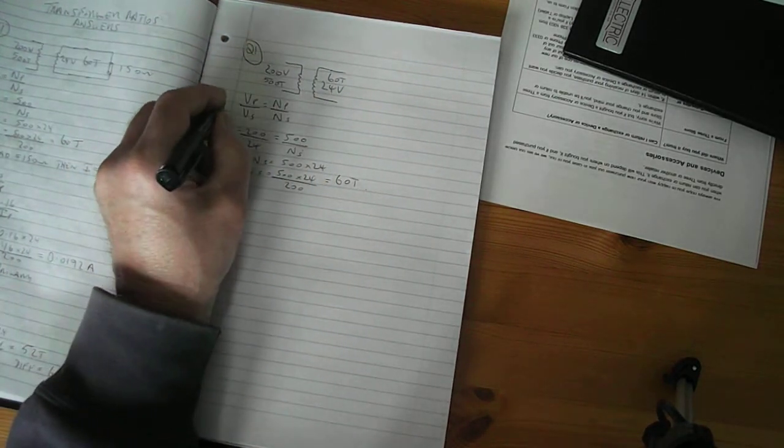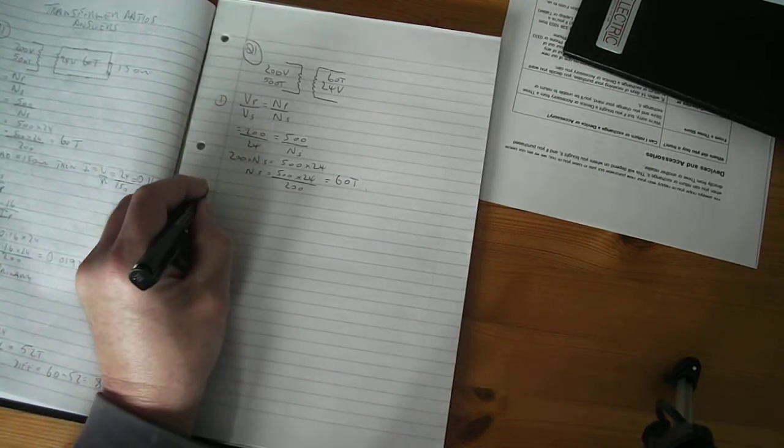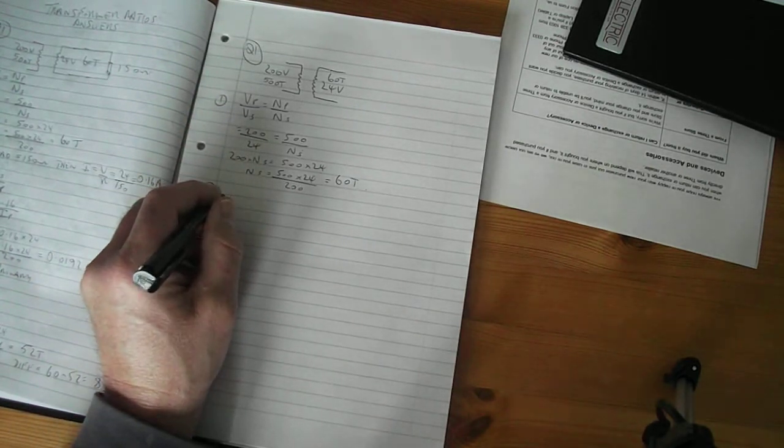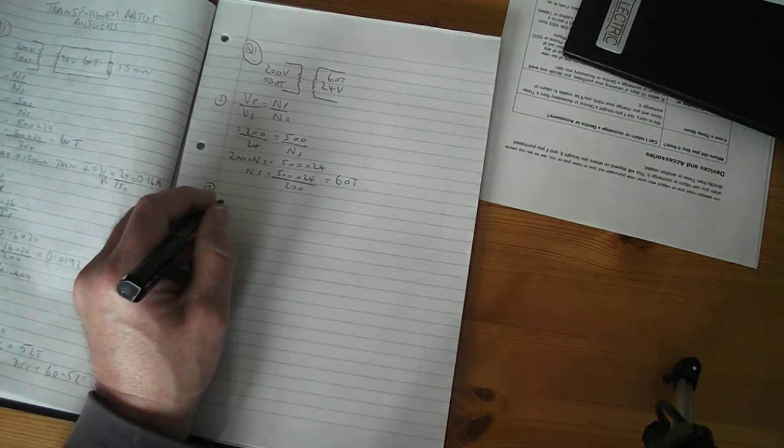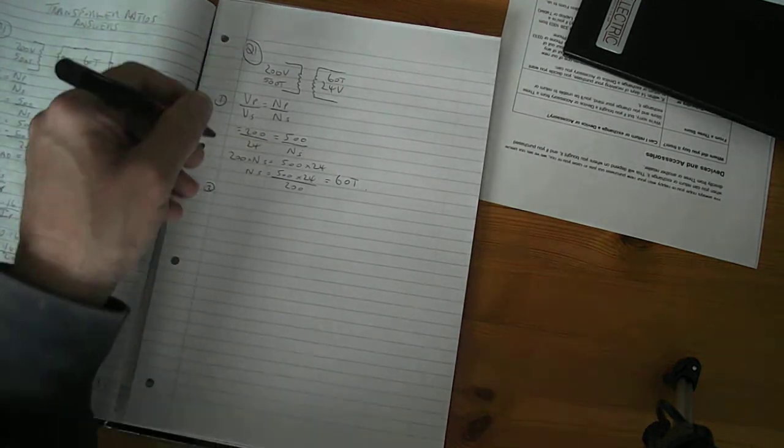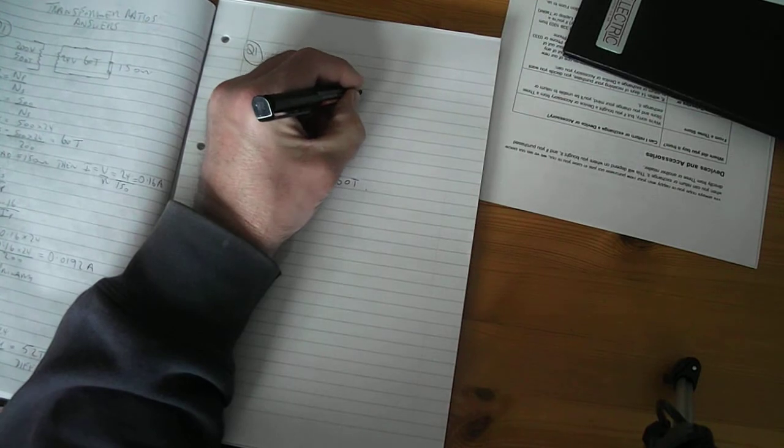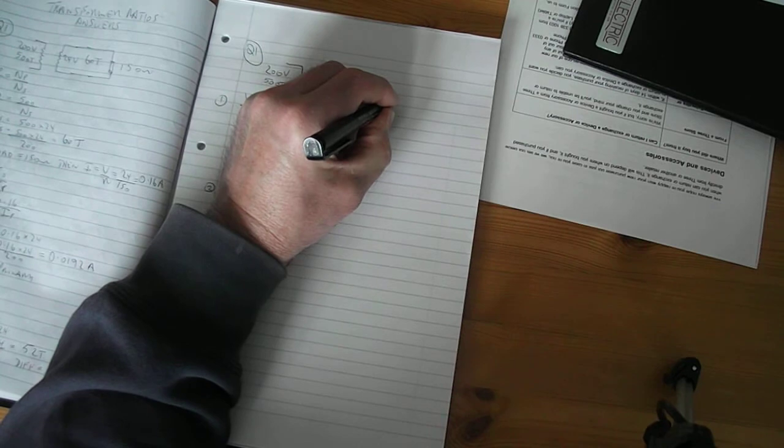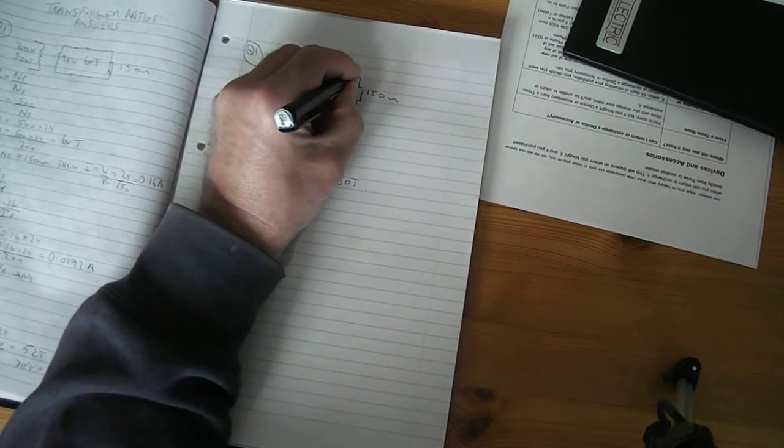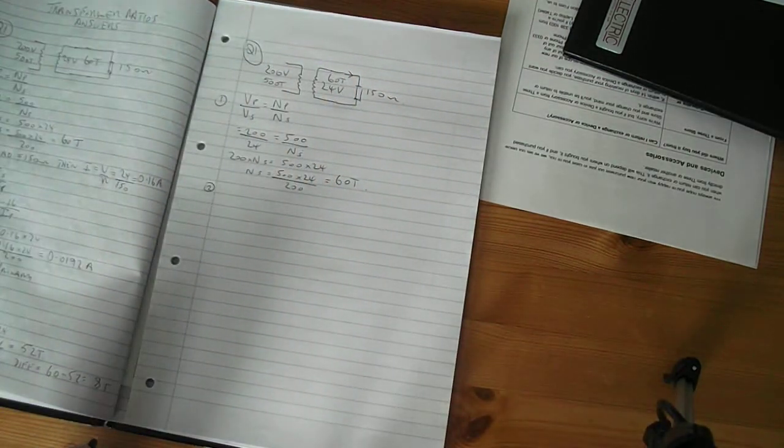So that's part one done. Part two of the question is saying the secondary is connected to a load of 150 ohms, what will the current be in the primary? So it's telling you that there's now a load here, which you can just draw a sketch in, of 150 ohms on the secondary.